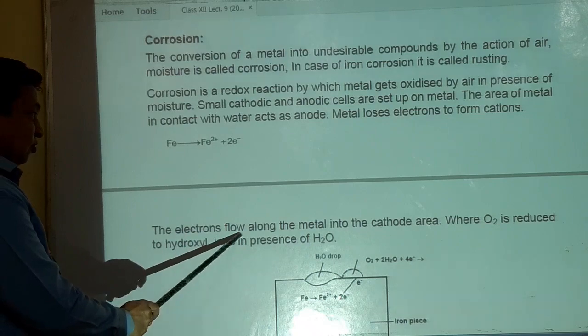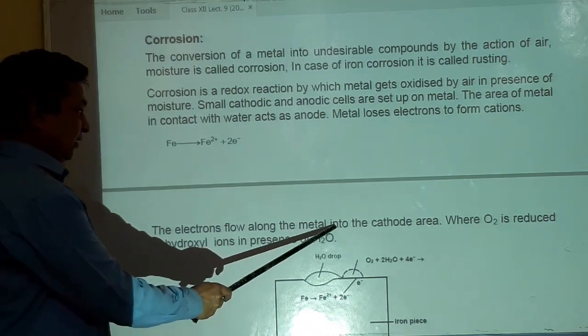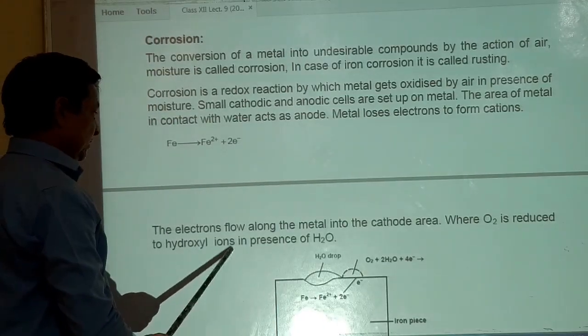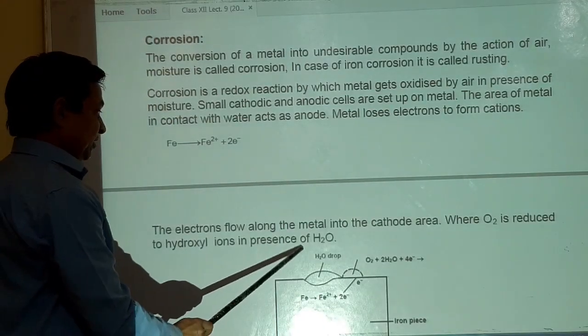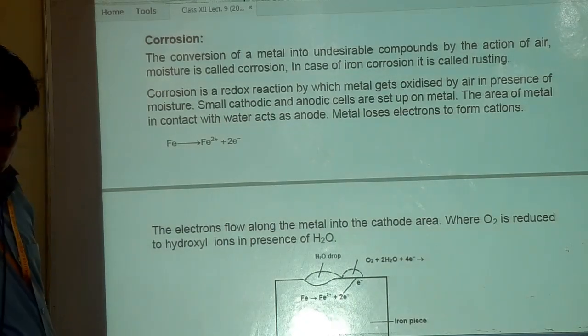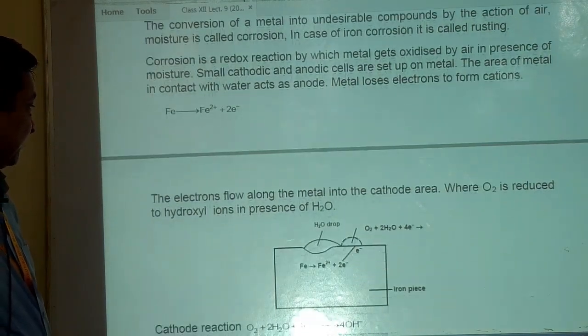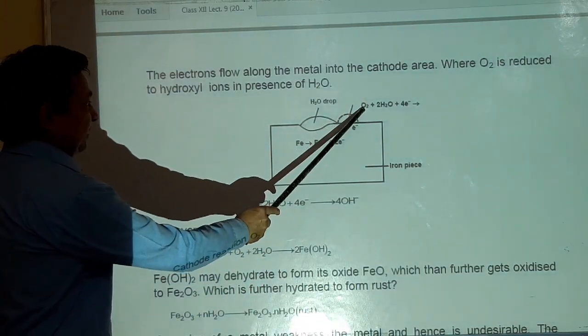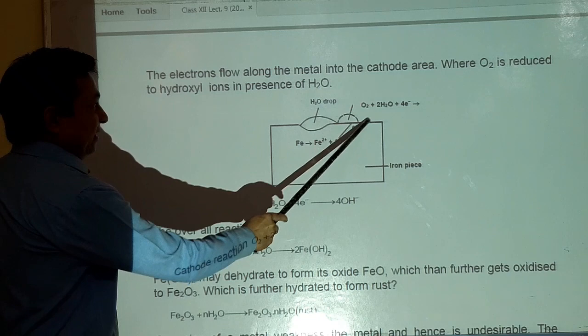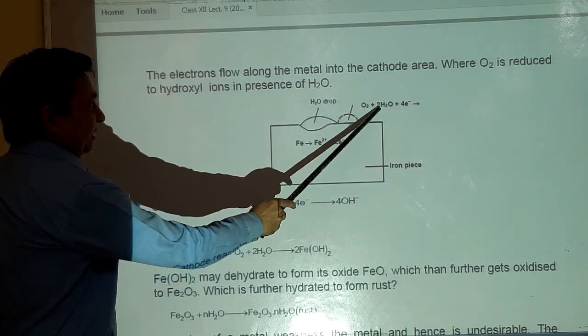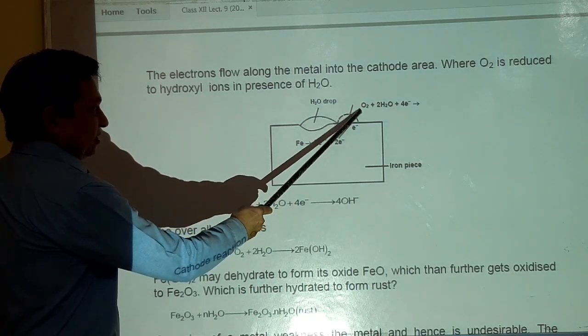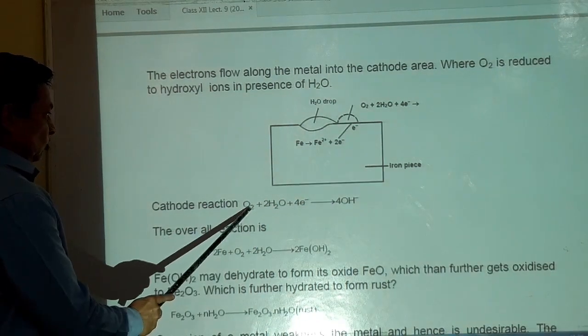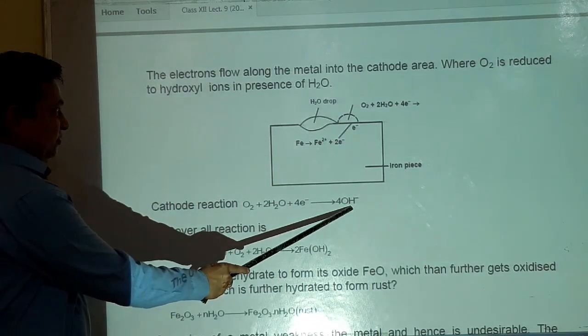The electrons flow along the metal into the cathode area where O2 is reduced to hydroxyl ions in presence of H2O. तो यह बना रखा है. O2, इसका reduction हो रहा है. यह O2 atmosphere से और यह aqueous solution में. Water, moisture, यह oxygen plus 4 electrons. O2 plus 2H2O plus 4 electrons gives 4OH minus.